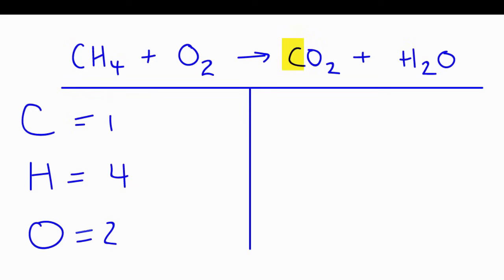On the product side, I have one carbon, I have two hydrogens, and then I have two oxygens with the carbon dioxide, but I have one oxygen atom with the water. That gives me a total of three oxygen atoms on the product side.